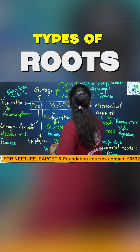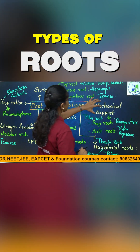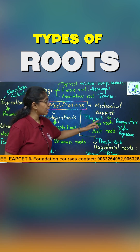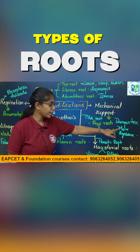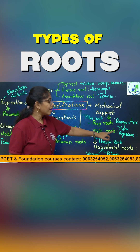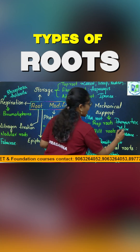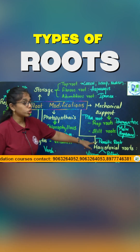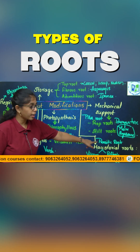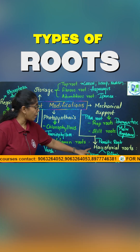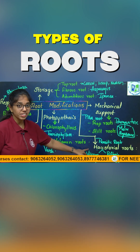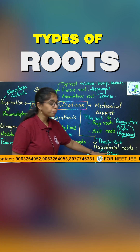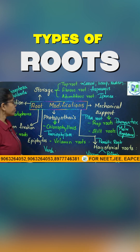Then, roots which are modified for mechanical support: prop roots or pillar roots include the banyan tree. Stilt roots include maize and sugarcane. Then haustorial roots or parasitic roots include partial parasites like viscum and striga, and complete parasites like rafflesia and cuscuta.